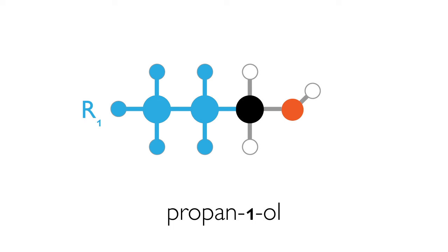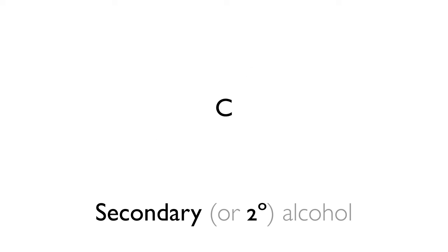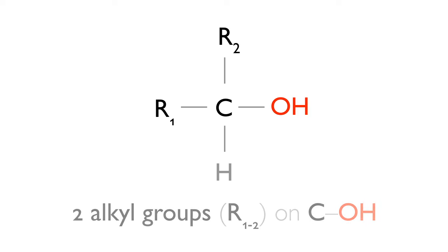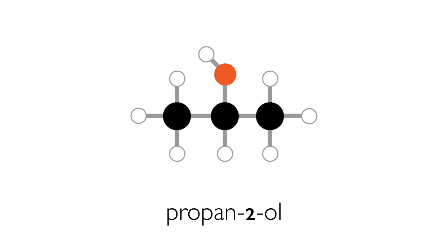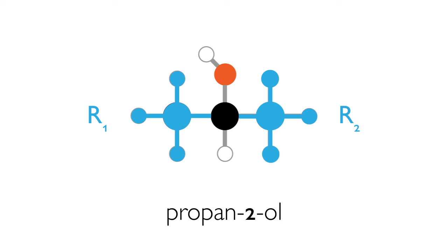In secondary alcohols, the carbon atom on which the OH group is bonded is attached to two carbon chains or two alcohol groups. Here is propan-2-ol. Here is the carbon atom on which the OH is attached, and here you can see the two alcohol groups or two chains of carbons attached to this carbon.